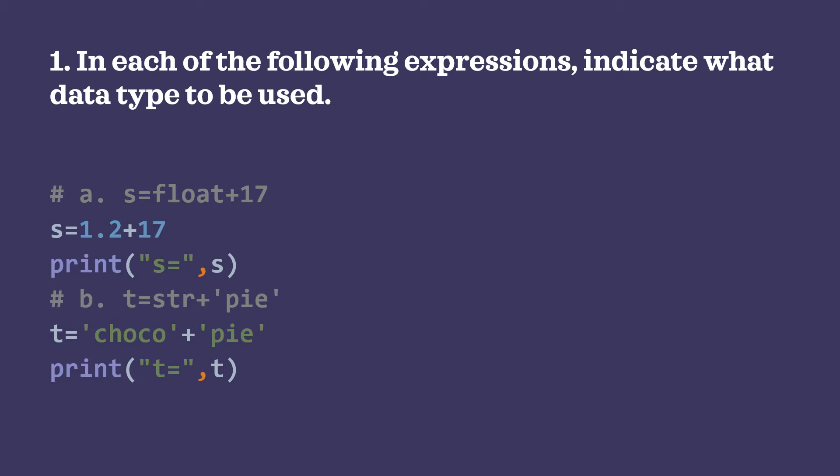The first one is s = dash + 17. Here we can put it as float. If you add a float data type with an integer value — here 17 is integer — you can add it with any float value, let's say 1.2. Then that will be added and the output will also be a float value. You can see the answer is s = 18.2.